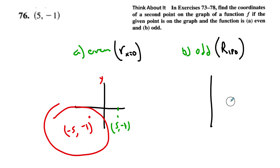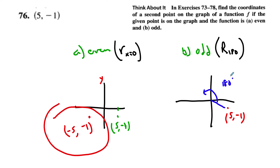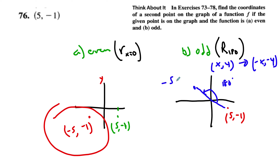For odd: odd functions have rotational symmetry of 180 degrees about the origin. A rotation of 180 degrees takes (x, y) to (opposite x, opposite y). So starting from (5, negative 1), the rotation gives (negative 5, positive 1). If the function were odd, the point (negative 5, 1) would have to be part of the graph.